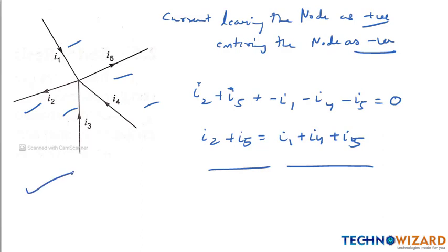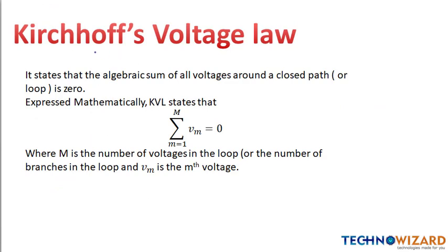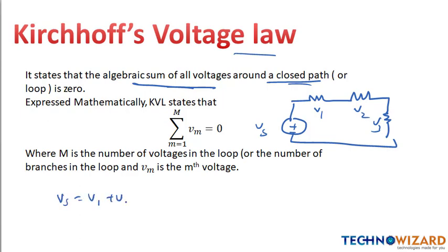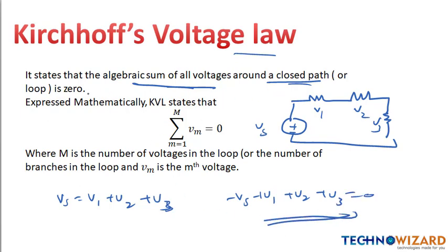Now we will come to Kirchhoff's Voltage Law, that is KVL. It states that the algebraic sum of all voltages around a closed path is zero. Suppose this is our closed path with three resistances and a voltage source Vs. The voltages are V1, V2, V3. We can write Vs equals V1 plus V2 plus V3, or equivalently, minus Vs plus V1 plus V2 plus V3 equals zero, because the algebraic sum of all voltages in a closed path is zero.